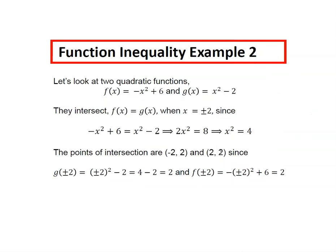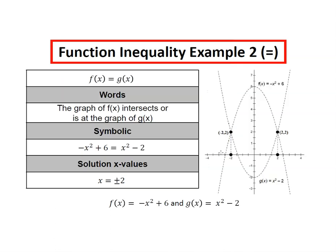For our second example, we have two quadratic functions. They're equal at x equals plus or minus 2. And the two points of intersection are (-2, 2) and (2, 2). When we look at where they're equal, we see the two points where the two quadratic functions cross. So x equals plus or minus 2.